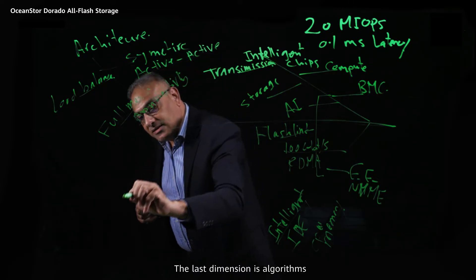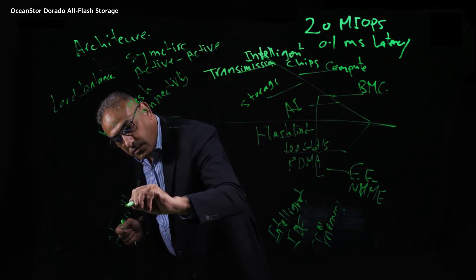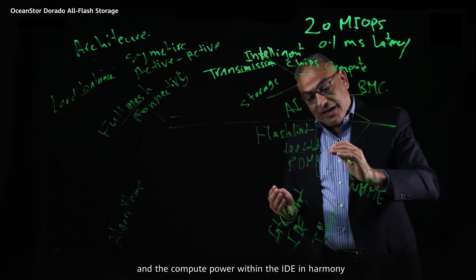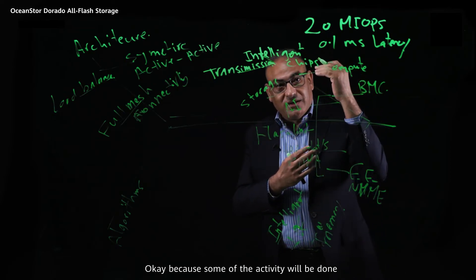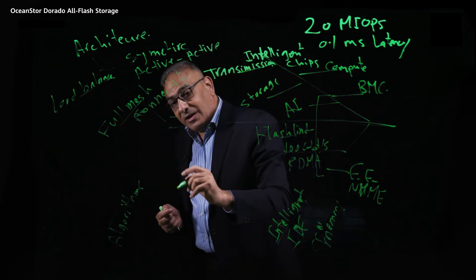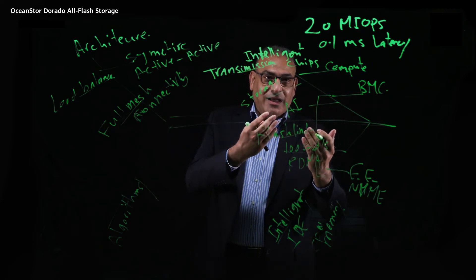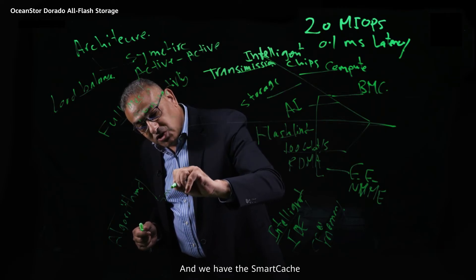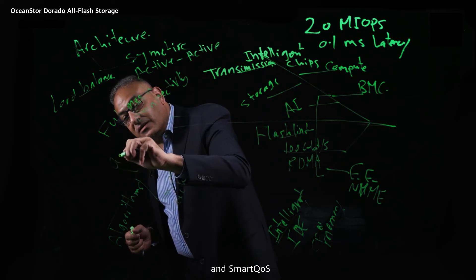The last dimension is algorithms. We use Flashlink to keep the compute power at the controller level and within the IDE in harmony, because some activity will be done at the controller level and other activity at the disk enclosure level — so we need algorithms to align them. We also have smart cache and smart quality of service.